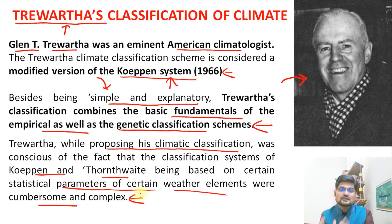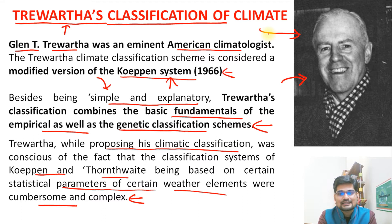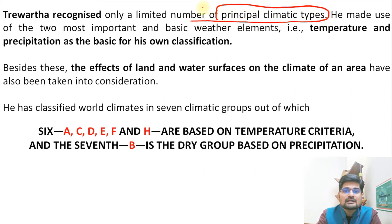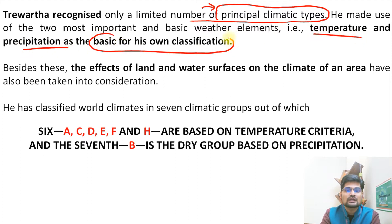The whole idea was that what pre-existed was complex, so Trewartha tried to decode it, simplify it, and explain to the world and to scholars that this classification system could be deconstructed and simplified. Trewartha recognized only a limited number of principal climatic types and made use of two important basic weather elements — temperature and precipitation — as the basis for his classification.